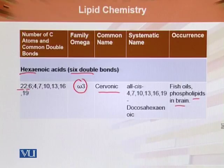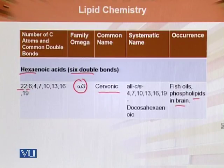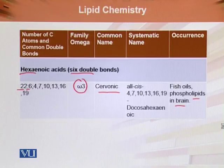Their occurrence in nature has also been covered — some are present in plants, some in seeds, and some in plant seeds. And some are found in fish and cod liver oils. These are the different forms of fatty acids that are physiologically important and their natural occurrences.